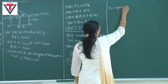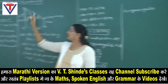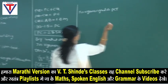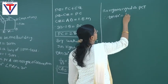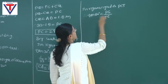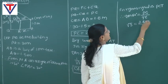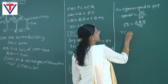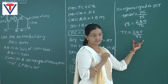Now in right angle triangle PCT, we use tan 60 degrees. The opposite side is PC, and the adjacent side is TC. The value of tan 60 is root 3. PC is known as 28.5. So root 3 equals 28.5 upon TC, giving TC equal to 28.5 upon root 3.